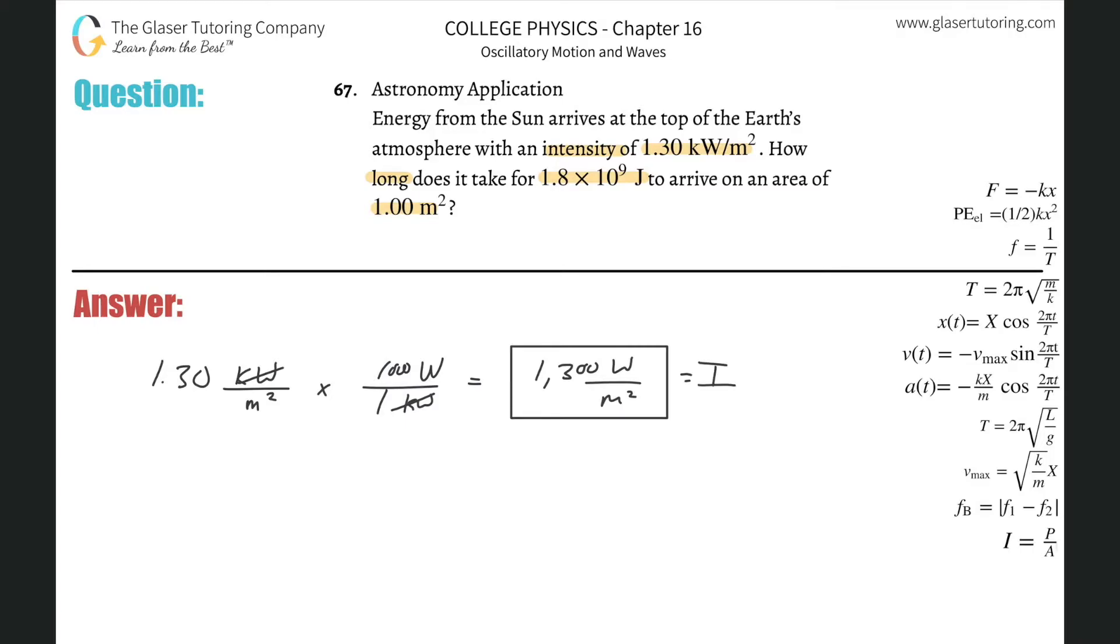So I know I'm dealing with intensity, and they're talking about area here. So I'm thinking, how is intensity and area related to one another? Oh look, I have a formula over here on the right hand side. It's going to be intensity is equal to the power applied divided by the area over which that power is applied.